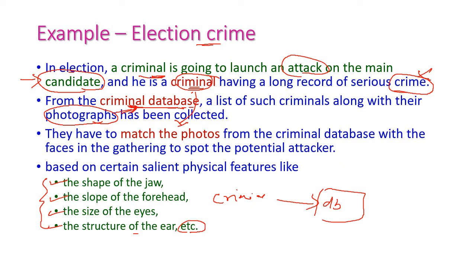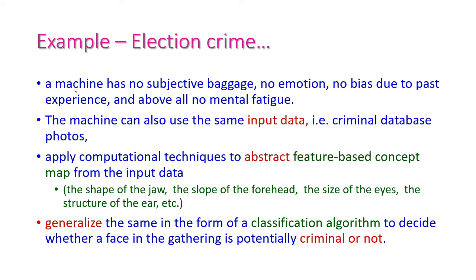Actually, this process is very difficult and very complicated one if we do that with manual, manual process. But when we come to machine learning, we can easily identify the criminal by comparing the criminal photo with existing input data. Because the machine has no subjective baggage, emotions, or bias due to past experience.